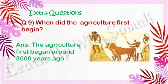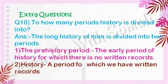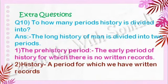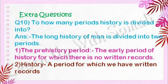Question number nine: When did agriculture first begin? The answer is agriculture first began around eight thousand years ago. Question number ten: How many periods is history divided into? The long history of man is divided into two periods: number one, prehistory — the early period of history for which there are no written records; and number two, history — a period for which we have written records.